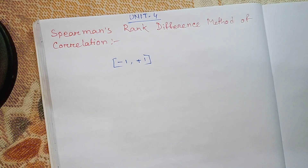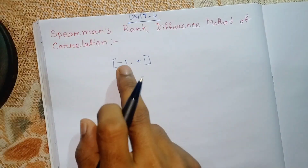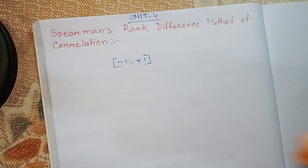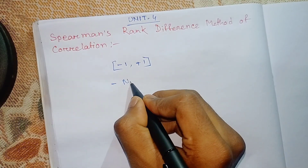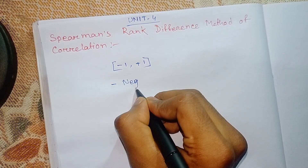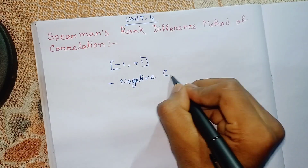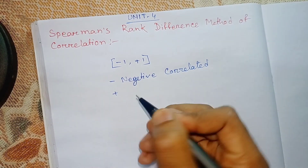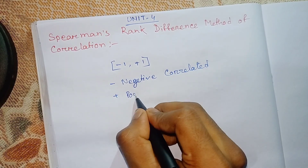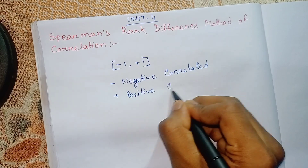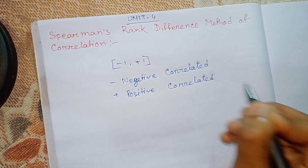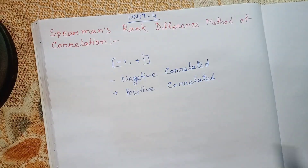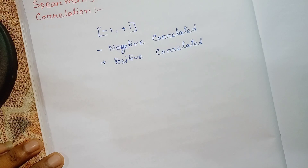The result ranges from minus 1 to plus 1. If the result is minus 1, it is small negative correlated. If the result is plus 1, it is positive correlated. This shows positive correlation.